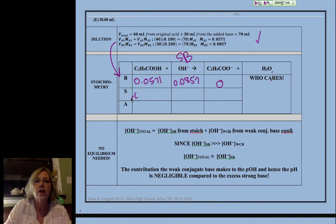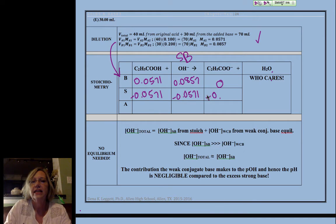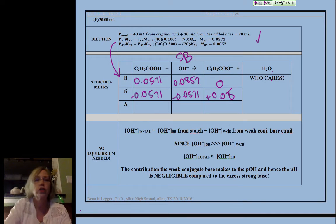Alright, so it's our propanoic acid that is now our limiting reactant. It's going to drive our pH. Okay, so I'm going to set up a little bit. 0.0571. So it's our strong base that's going to drive our pH.